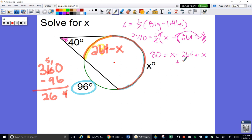Now we can add 264 to both sides. That gives us 344 equals 2 x's. And lastly, when I divide by 2, 172 degrees would be the value for x.